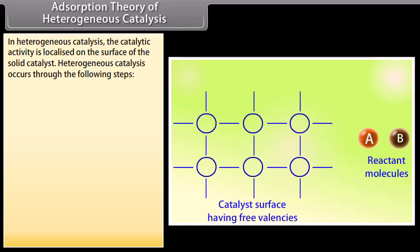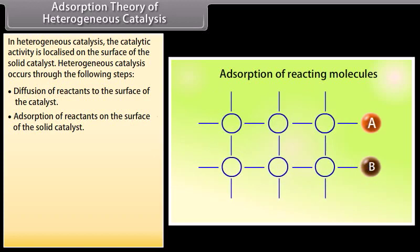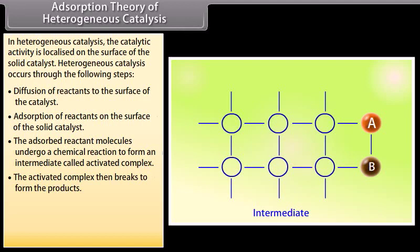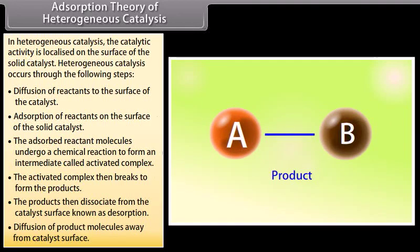In heterogeneous catalysis, the catalytic activity is localized on the surface of the solid catalyst. The process occurs through the following steps: diffusion of reactants to the catalyst surface; adsorption of reactants on the solid catalyst surface; the adsorbed reactant molecules undergo a chemical reaction to form an intermediate called an activated complex; the activated complex breaks to form the products; products dissociate from the catalyst surface (desorption); and finally, diffusion of product molecules away from the catalyst surface.